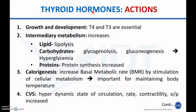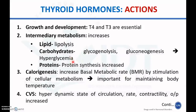The first physiological role of thyroid hormone is growth and development — an optimum level of T4 and T3 is essential for optimal growth and development. The second role is intermediary metabolism: thyroid hormone increases metabolism, producing lipolysis in lipid metabolism, and in carbohydrate metabolism it increases glycogenolysis and gluconeogenesis, thereby raising blood glucose levels and potentially causing hyperglycemia. In protein metabolism, it increases protein synthesis.